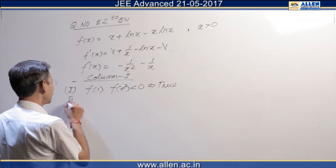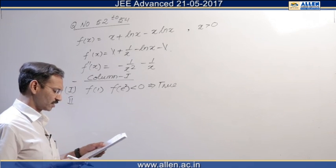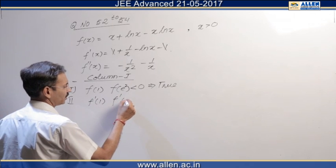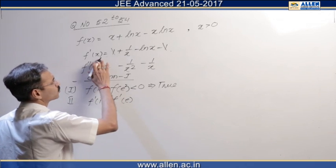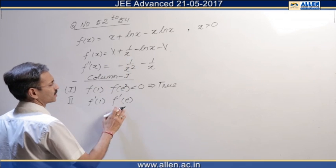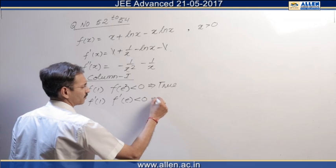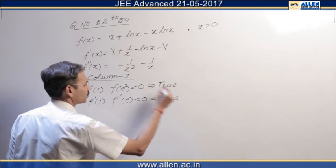The second statement is about f dash x at x equals 1 and e. f dash 1 is 1 whereas f dash e is 1 upon e minus 1, so again negative. So I will say the statement is a true statement.